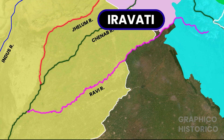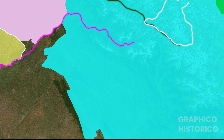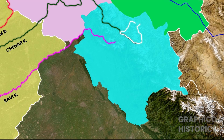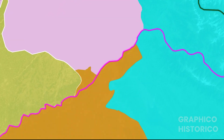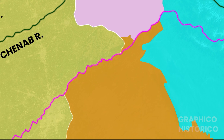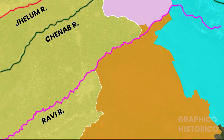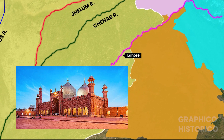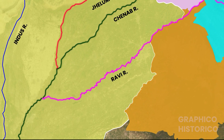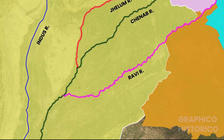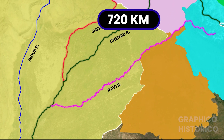Next is the Ravi river, whose Sanskrit name is Iravati. It originates near Rohtang Pass. The Ranjit Sagar Dam is situated on the Ravi river. It forms the boundary between Jammu and Kashmir and Punjab, then creates the India-Pakistan international border and enters Pakistan. Pakistan's famous city Lahore is situated on the banks of this river. It then meets the Chenab river at Rangpur. The length of the Ravi river is 720 km.